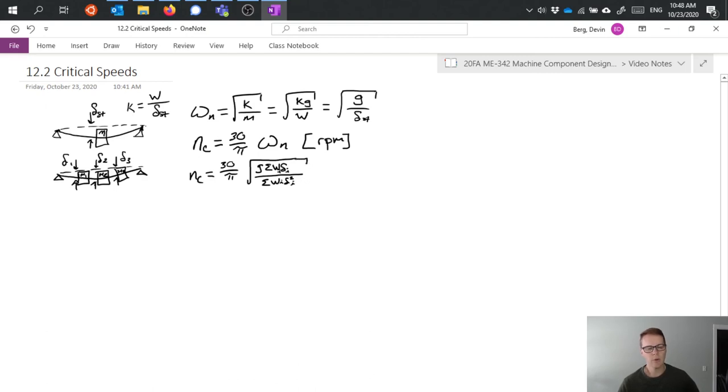And really what these two summations are doing is getting like a weighted average for these various components. So it's taking all the little components and weighting them over the whole and finding their contribution then to that critical speed.